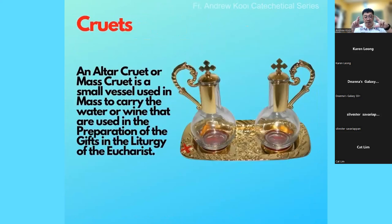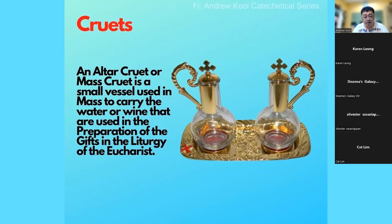Cruets are the small containers which contain the water and wine. Strictly speaking, cruets are not exclusively altar items — they are used for secular use as well — but they are used specifically in Mass to store the water and wine for the preparation of gifts in the Liturgy of the Eucharist.